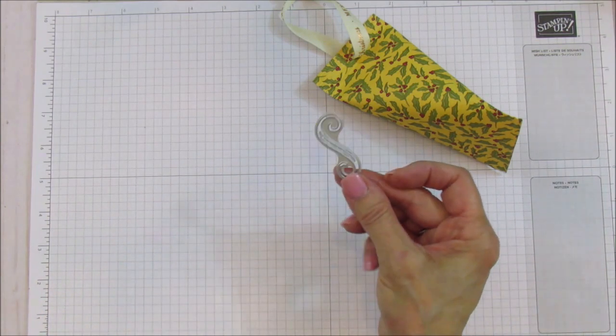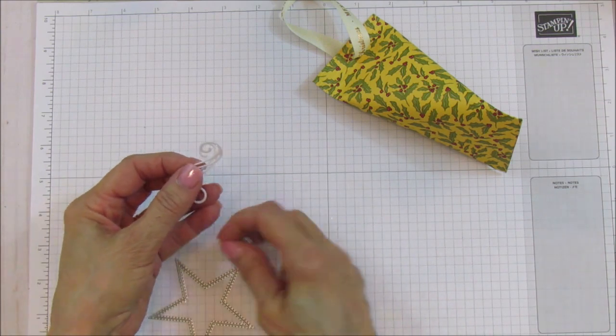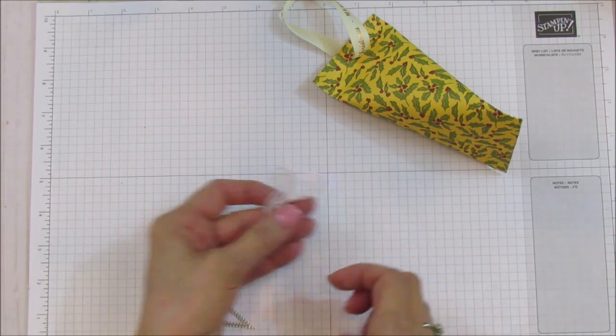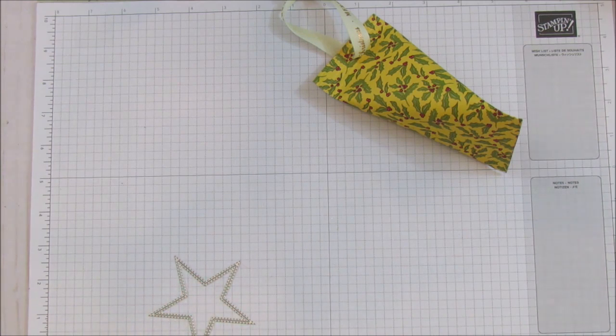And I ran three of these through on our sparkle glimmer paper. It's really pretty. And then we're going to bring up the big shot and we're just going to run that star through and we'll be ready to finish it up.